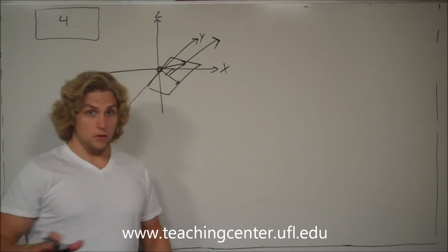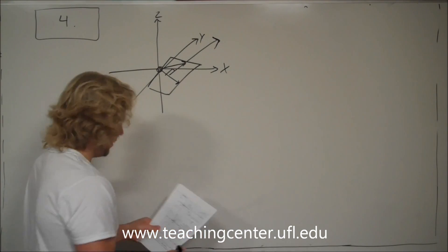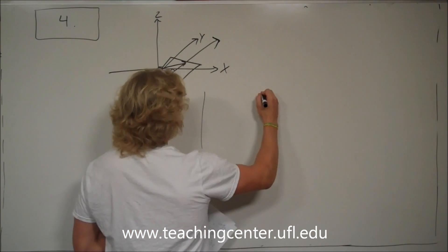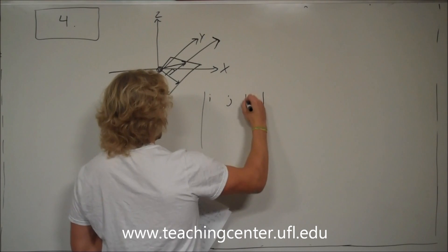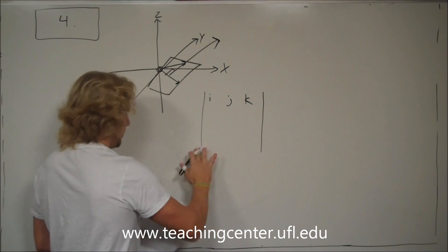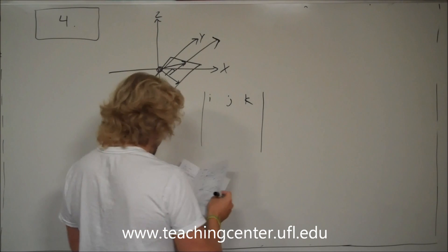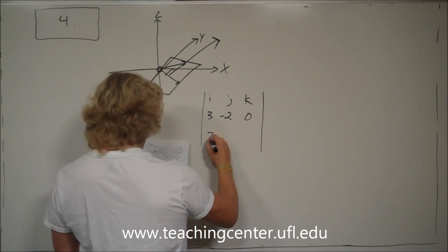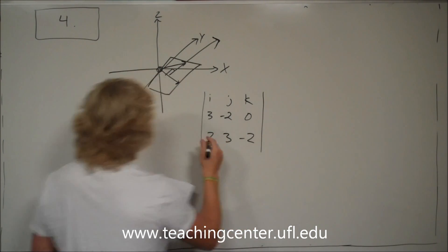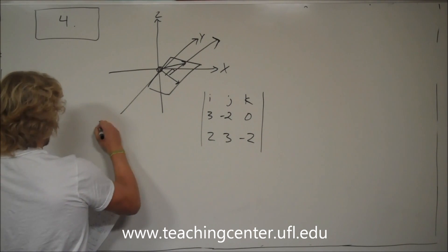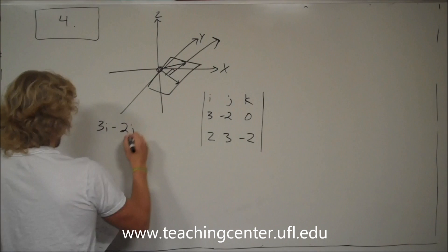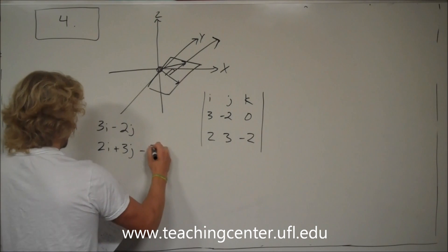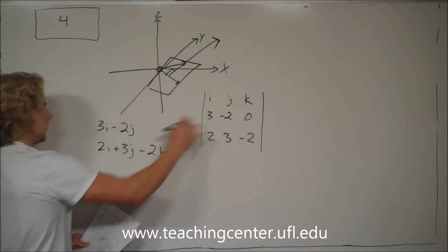An easy way to take a cross product — this is my method of doing it, you don't have to do it this way. First off, it is a 3 by 3 matrix with i, j, k in the first row. Then the first vector is 3, negative 2, 0, and the second vector is 2, 3, negative 2. So you have 3i minus 2j and 2i plus 3j minus 2k, which translates into this matrix.